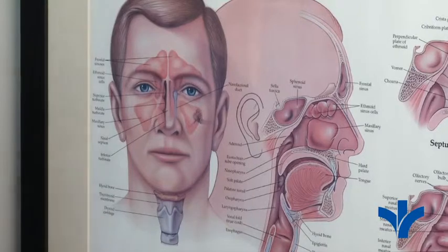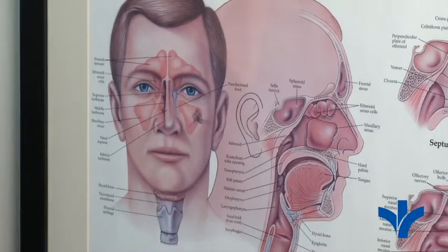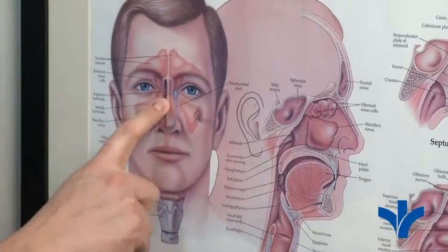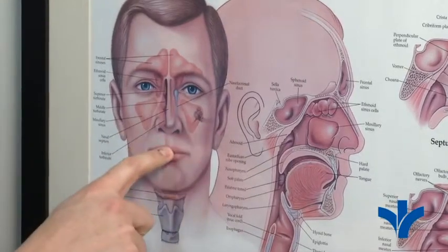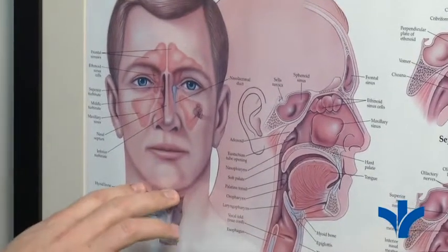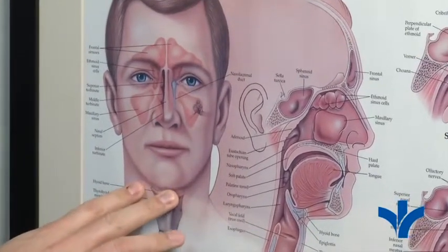Obstructive sleep apnea is usually a multi-layered obstruction, meaning you have problems inside the nose, problems inside the mouth, and possibly problems with the neck and throat.